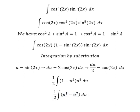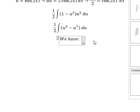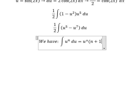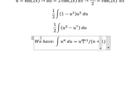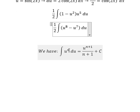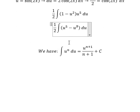Next we have the formula here. The integral of u to the n equals u to the n plus 1 over n plus 1. We need to add 1 to the exponent 5, so we have 5 plus 1 equals 6. For 7, we have 7 plus 1 equals 8.